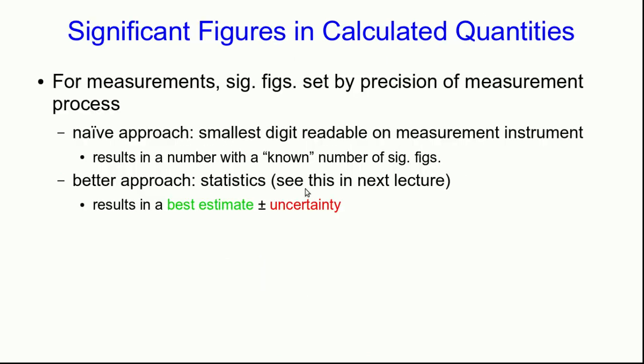So that's how things work for measurements. Something about our measurement process tells us our precision. Either we've taken the naive approach or, as we'll see next lecture, we've taken a better approach using statistics to get a best estimate and uncertainty.